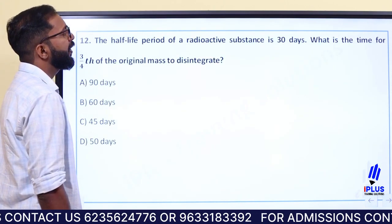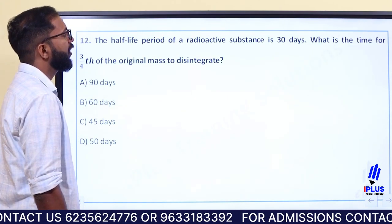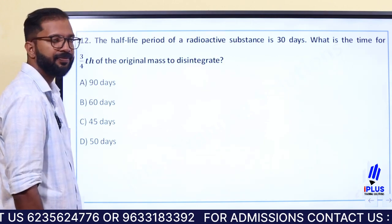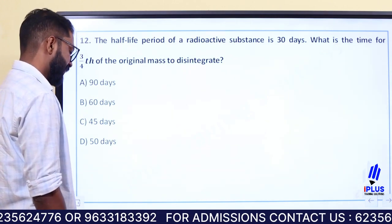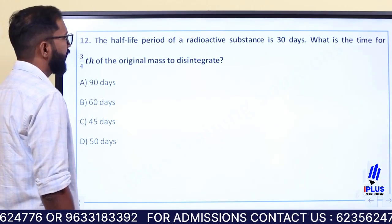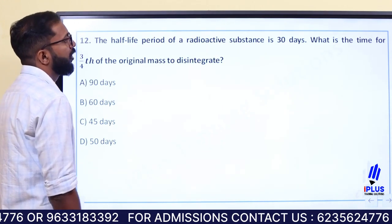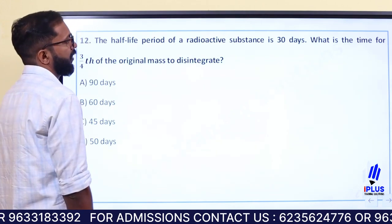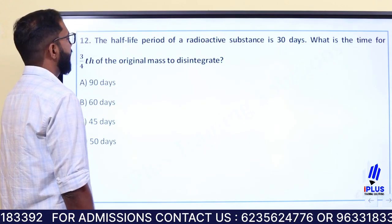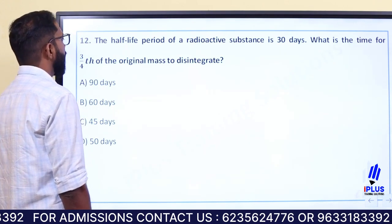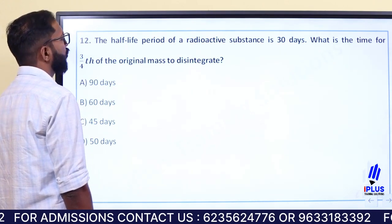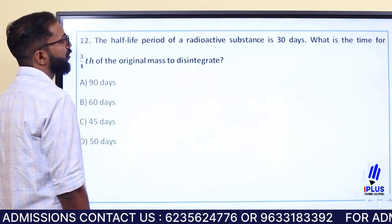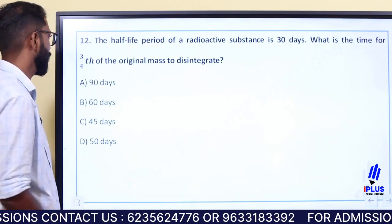The half life period of a radioactive substance is 30 days. What is the time for 3/4th of the original mass to disintegrate?